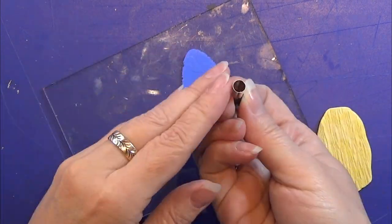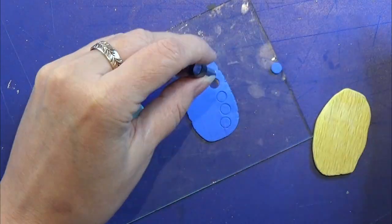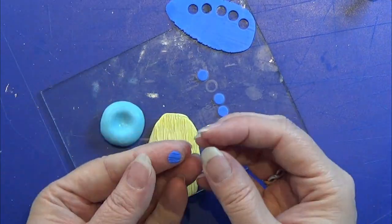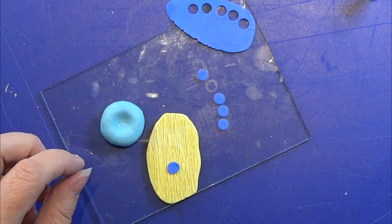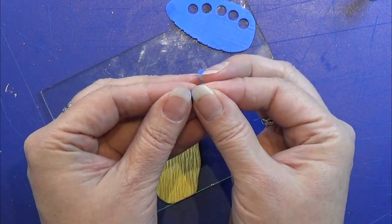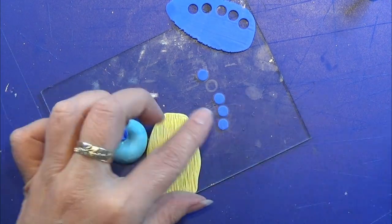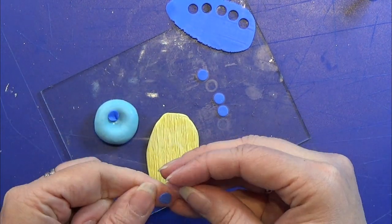I rolled out some light blue clay. You can use whatever color you want to. And I used this round circle cutter to cut out five round pieces. This little mold piece I have here is actually just some mold putty that I placed on some crepe paper and made a mold of that. And I am pushing both sides of these little round shapes onto the paper.